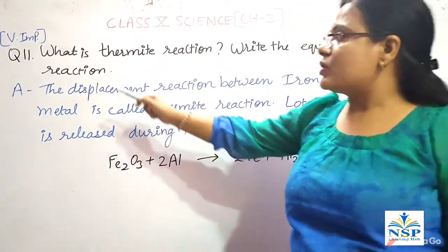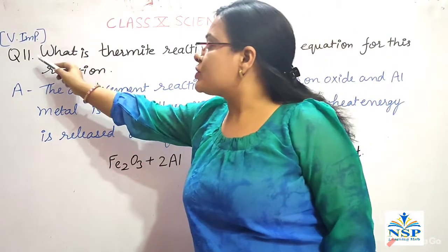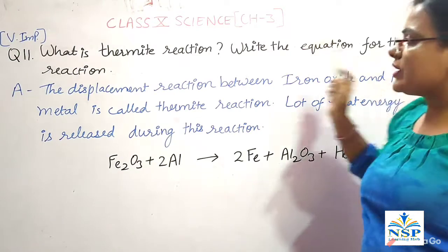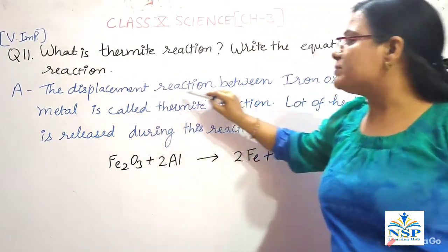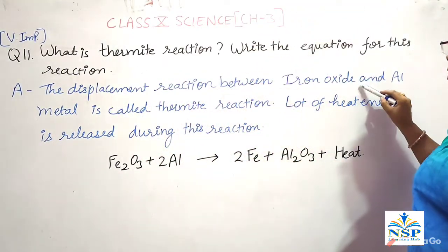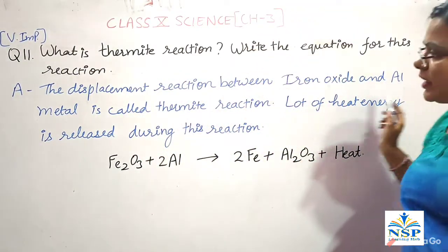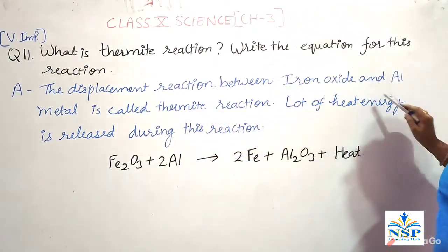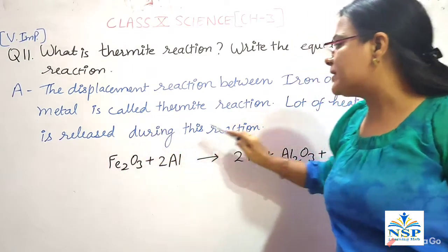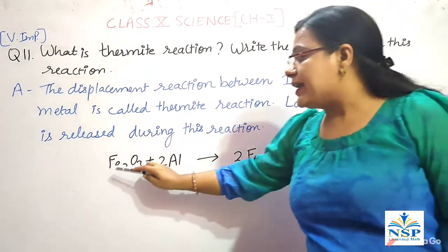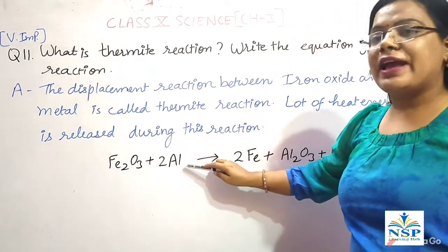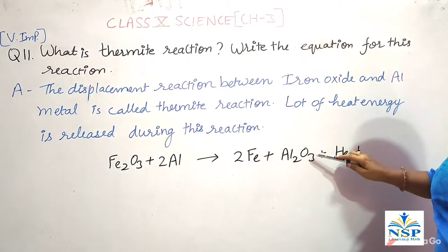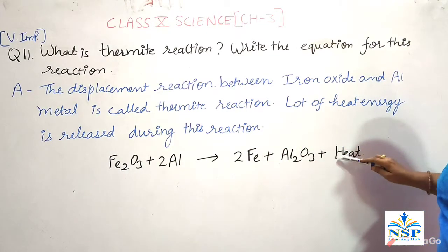Our next very important question: what is thermite reaction? Write the equation for this reaction. The displacement reaction between iron oxide and aluminium metal is called thermite reaction. A lot of heat energy is released during this reaction. Fe₂O₃ + Al → Fe + Al₂O₃ + heat.